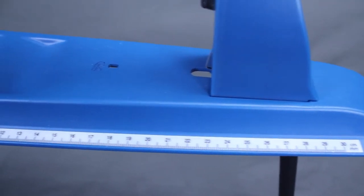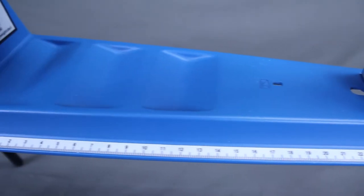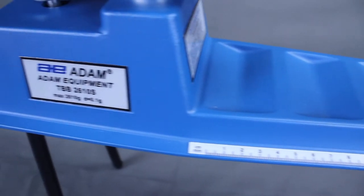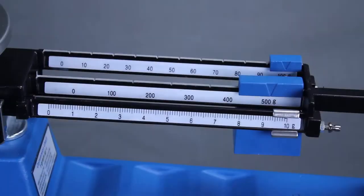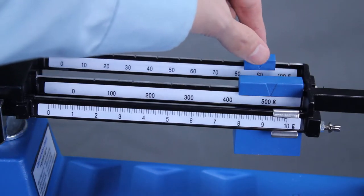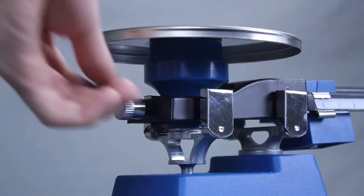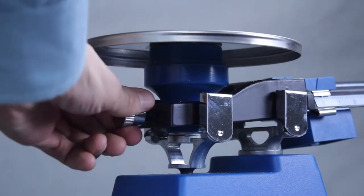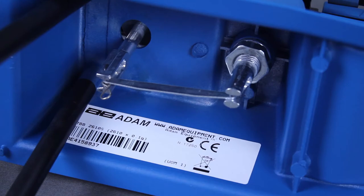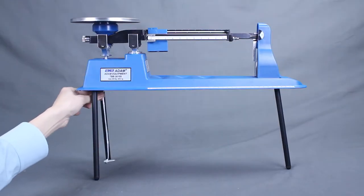The TBB is equipped with a ruler that is marked in both centimeters and inches for quick and easy measurement. To ensure proper measurement, the three sliding weights are notched to keep them in place. An adjustable knob allows users to fine-tune the zero range and a weigh-below hook is included for below balance weighing.